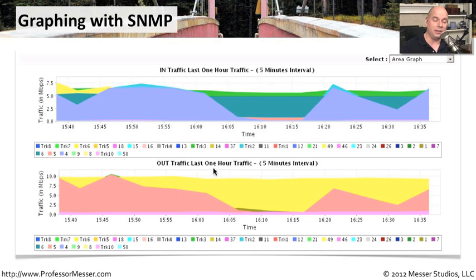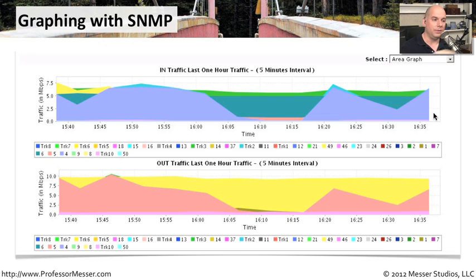Then we waited five minutes and queried the device again. You can see there was a difference in the amount of information — if traffic has gone in and out of that interface, the number will be a little larger. We perform some calculations to determine the delta in that five-minute period, then ask again five minutes later and again five minutes after that. When you're done, you can produce a graph showing a nice overview of throughput for that particular device. With multiple devices, multiple switches, and multiple routers, you can create a large number of metrics and graphs to really help you understand what's happening on your network.